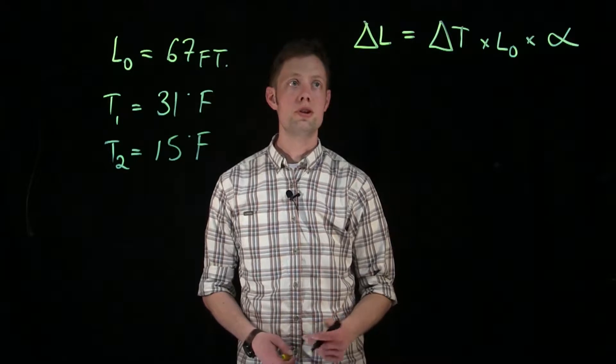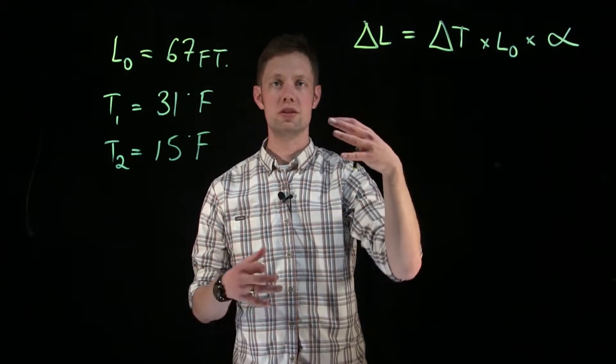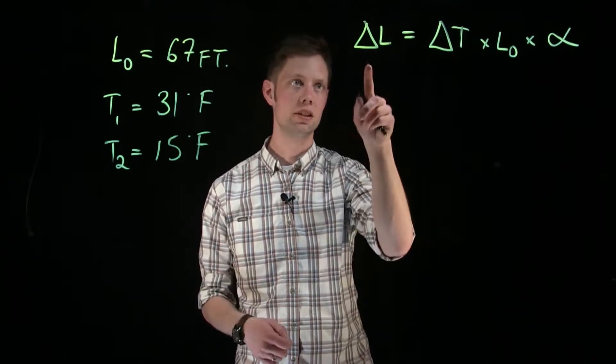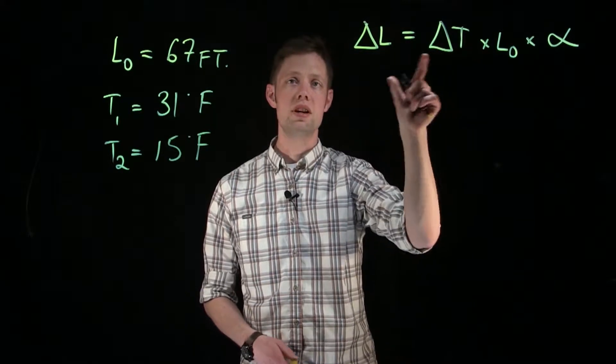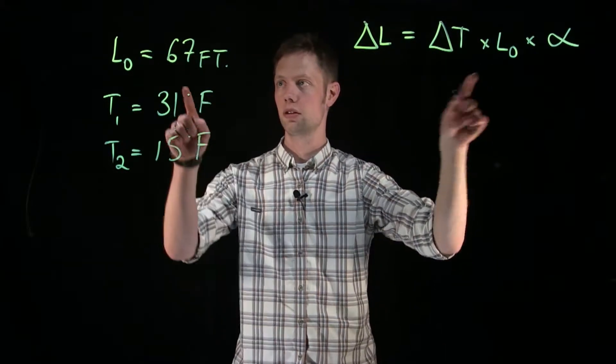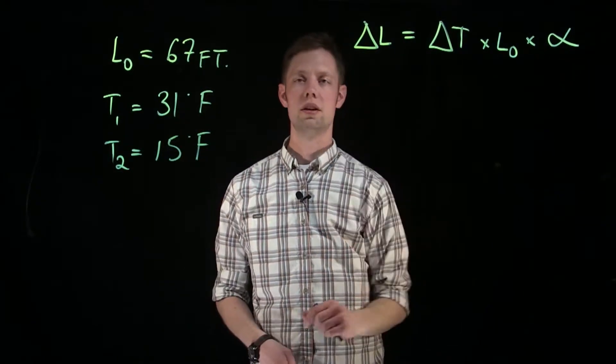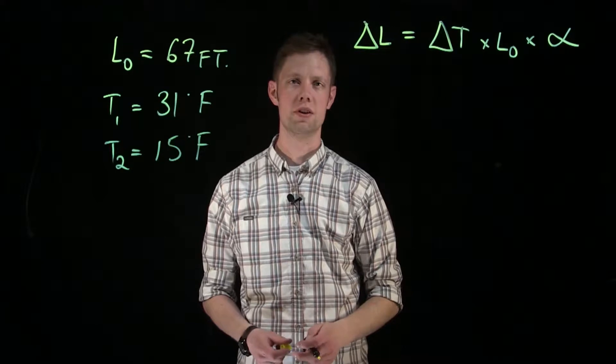So the formula we're going to use is this one here. This little triangle represents the change. It's called a delta. ΔL is the change in length. ΔT is the change in temperature. Then we have our original length, which is here, and the coefficient of expansion. This is just the symbol for coefficient of expansion.